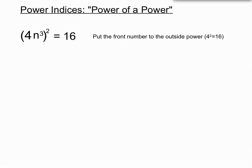4 times 4, 16. And then the rest of it is just following the normal rule that we just saw. So we will multiply the indices there.